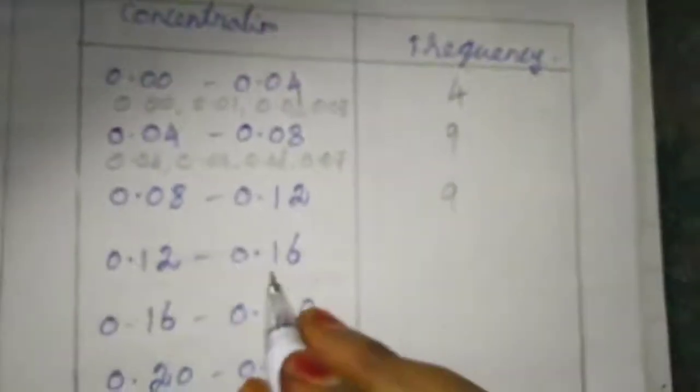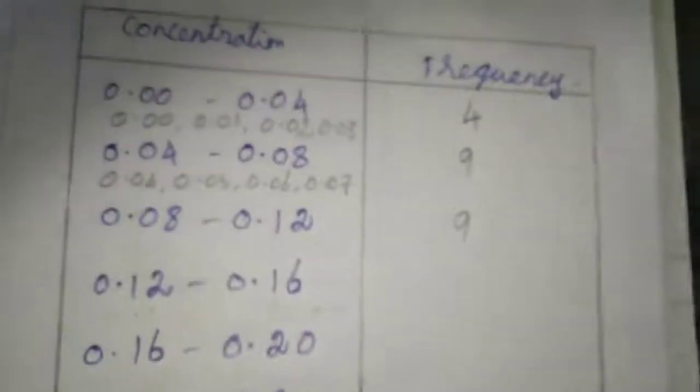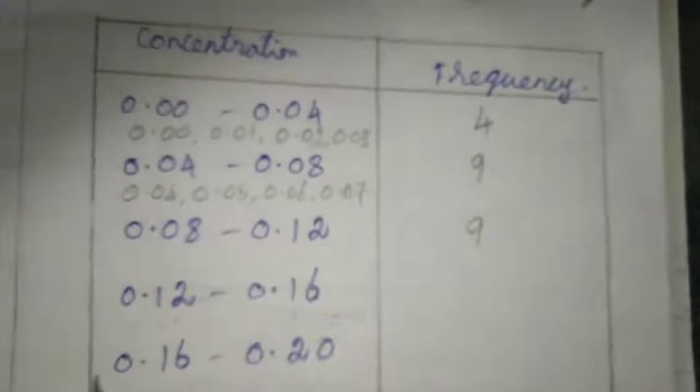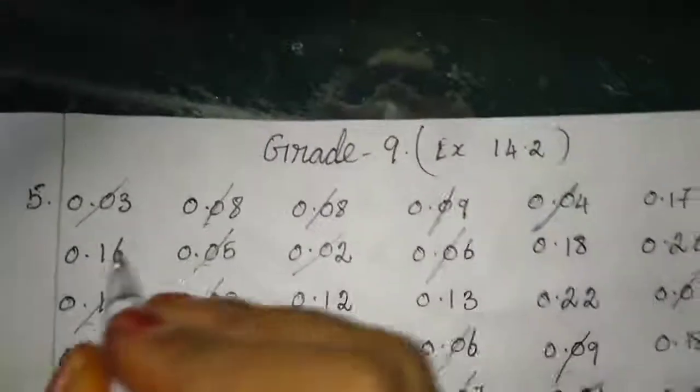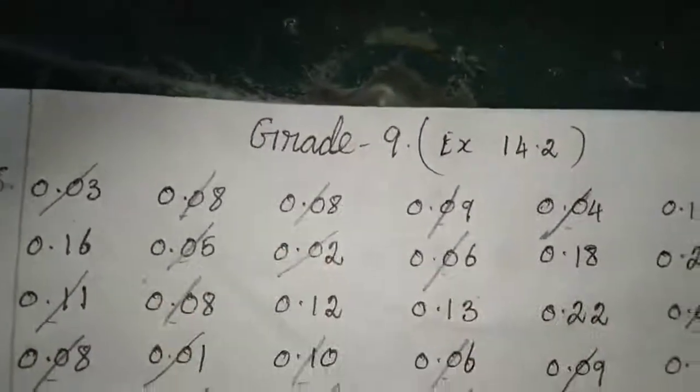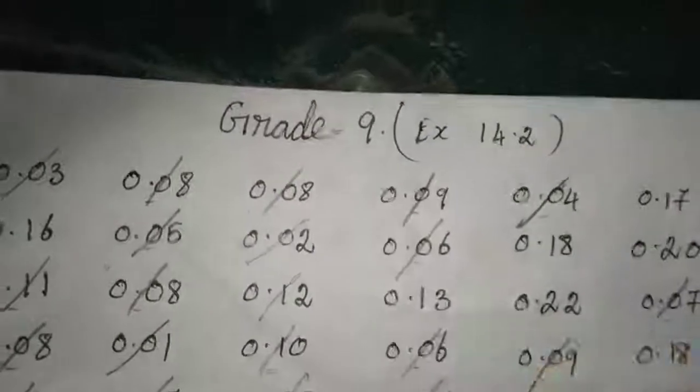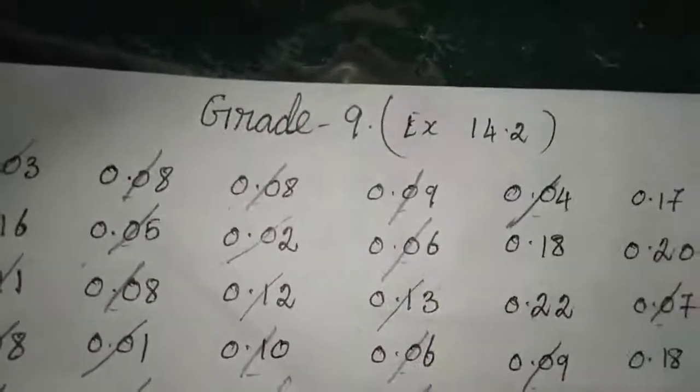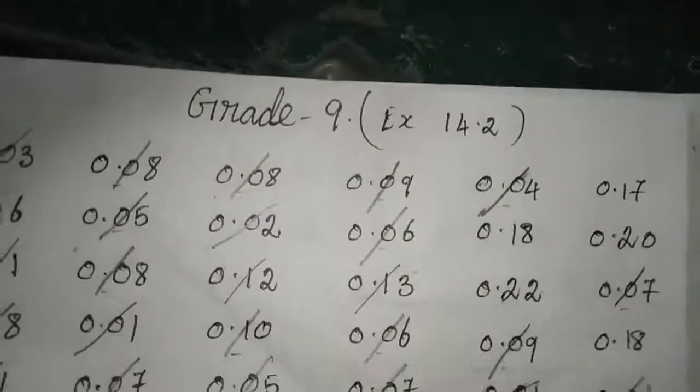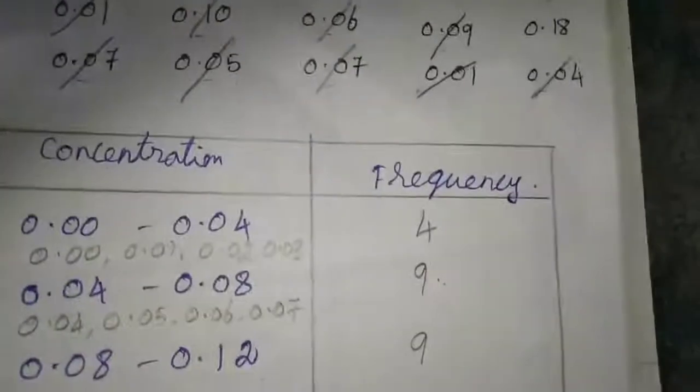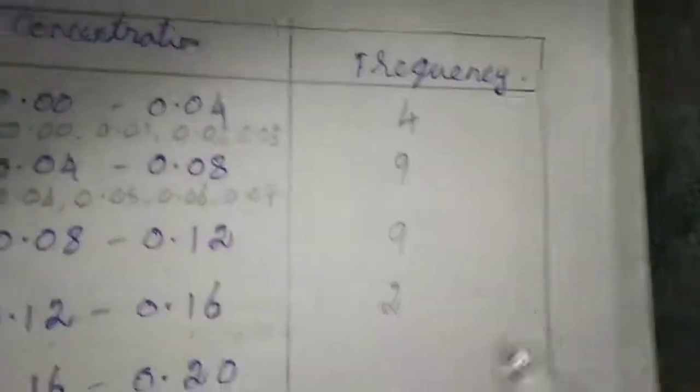Here also 0.12 to 0.16, like this only we want to tell. So I am going to refer now, see here, up to 15, so 1, 2, only 2 we have.